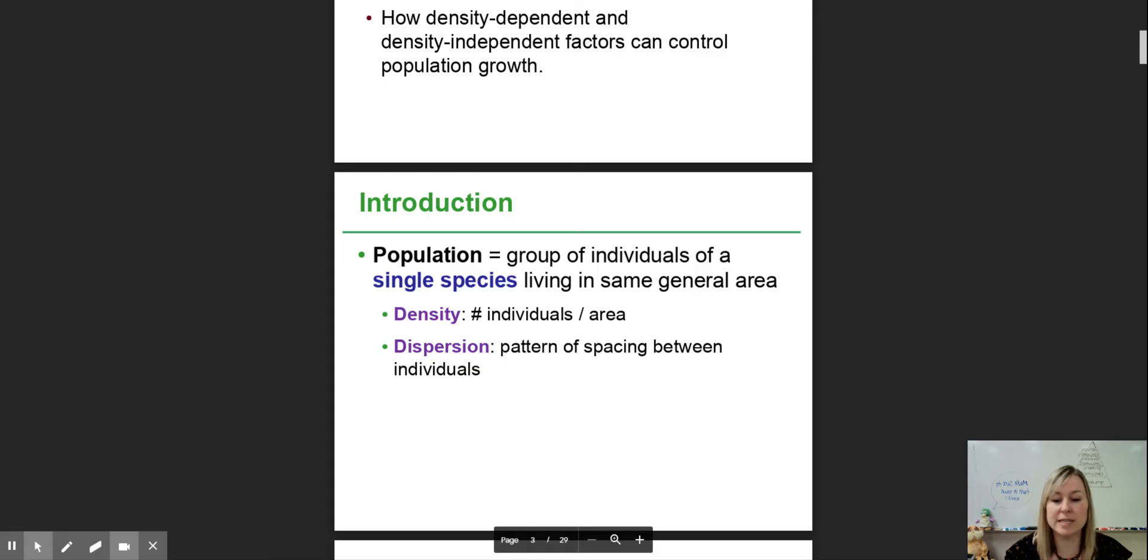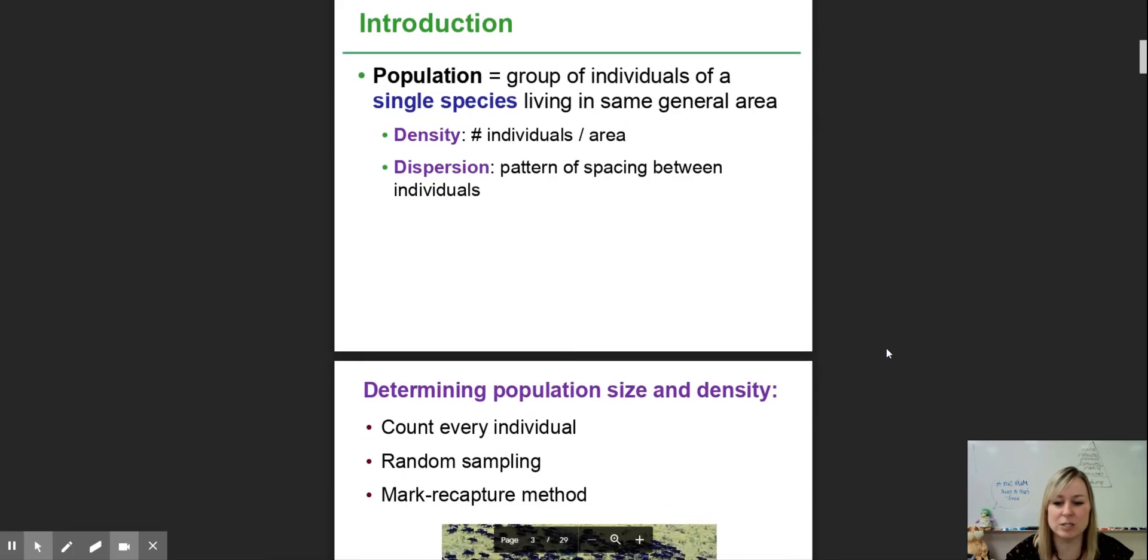When we consider density, we're referring to how many individuals are in a given area, like how many zebra per square meter or per acre.